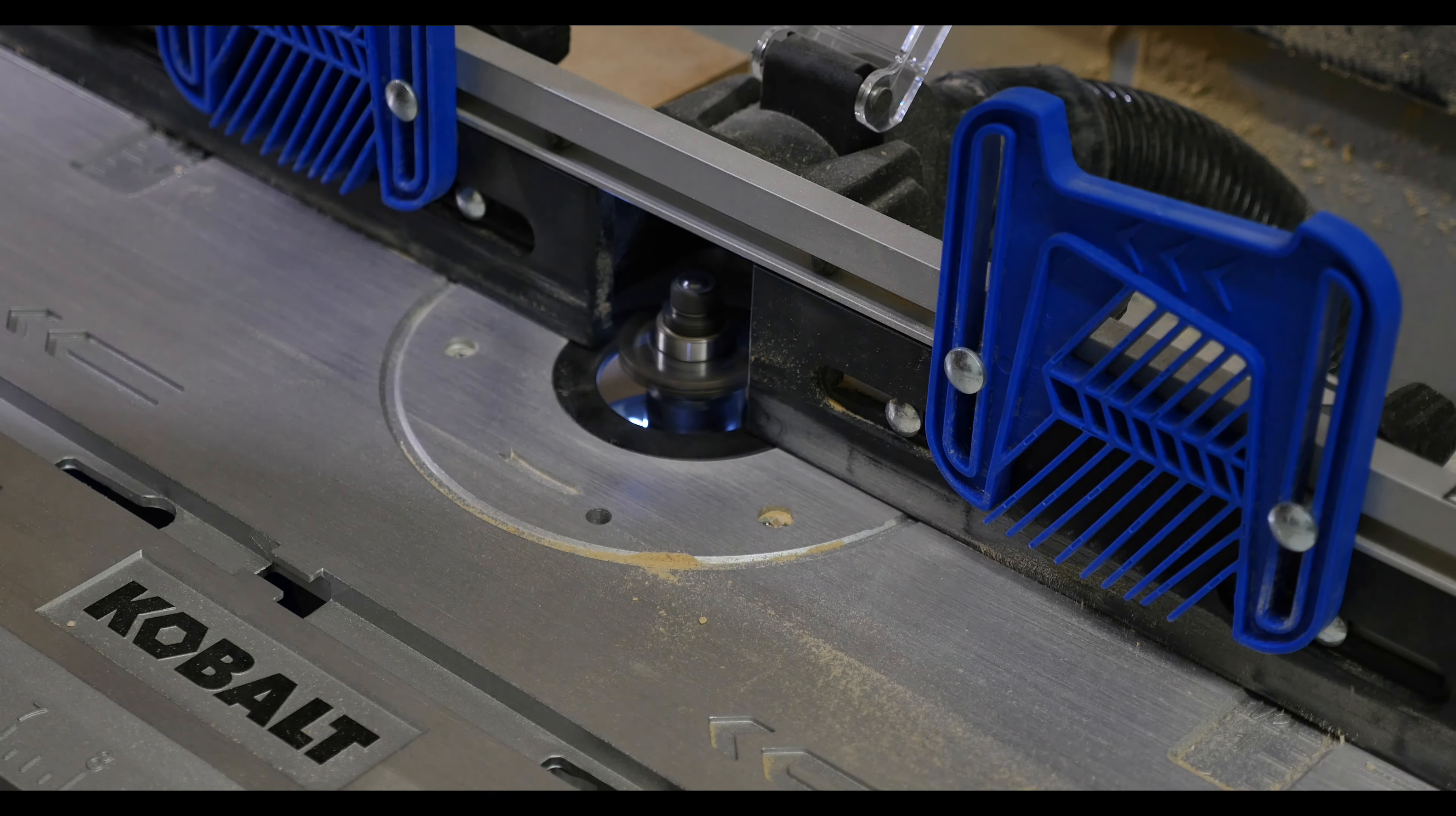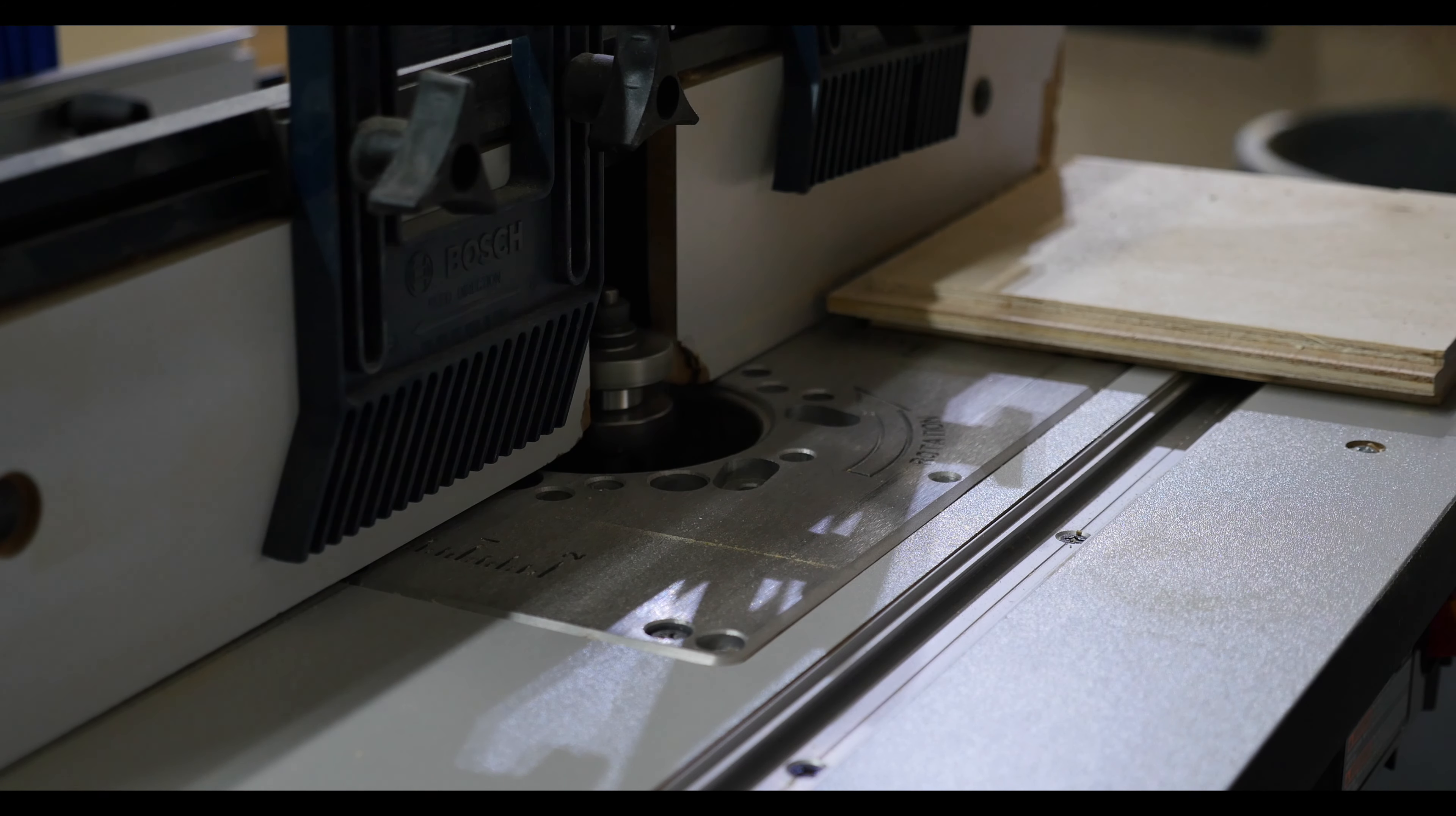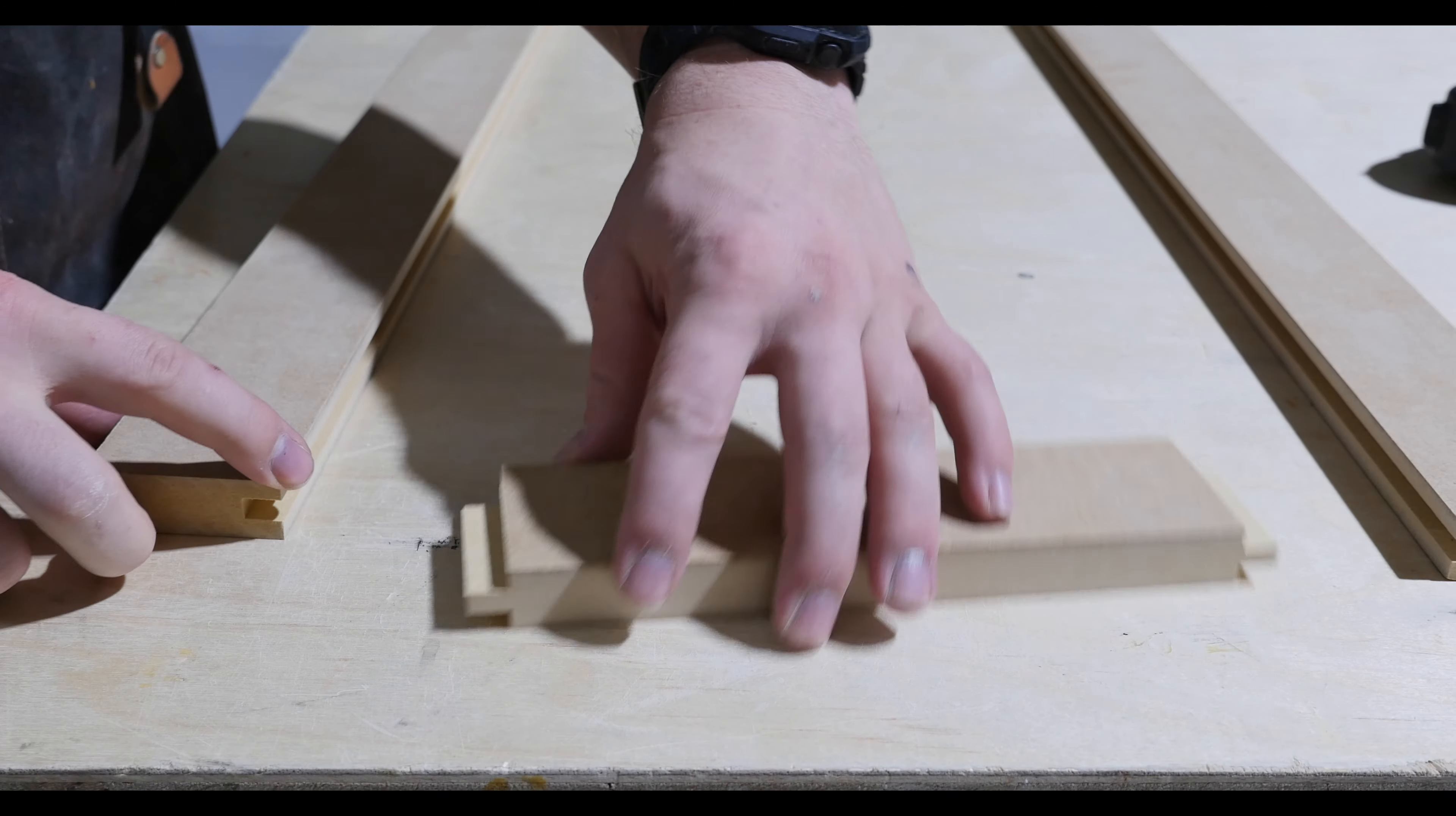Once we have our groove cut in the rails and styles we can go over to our other router table and cut the tongues in the rails. Now the biggest thing here is if you're going to do it the way I'm doing it where you actually are centering the tongue directly in the middle of the door then you could just flip over the rail like I just did there.